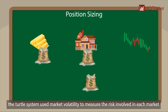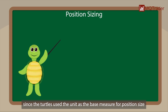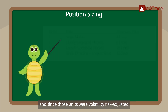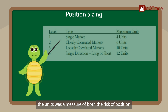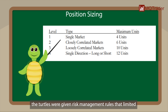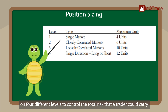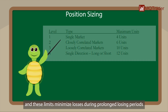The turtle system used market volatility to measure the risk involved in each market. Since the turtles used the unit as the base measure for position size, and since those units were volatility-risk adjusted, the unit was a measure of both the risk of a position and of the entire portfolio. The turtles were given risk management rules that limited the number of units maintainable at any given time across four different levels.